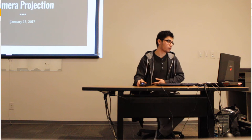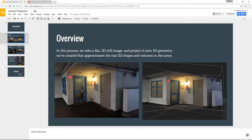Today we're going to go over camera projection — taking a flat still image and turning it into a 3D scene to use for our shots and backgrounds. It's kind of like freezing time; we can always turn around in the scene and use this as a diffuse map to create a shader based on that.